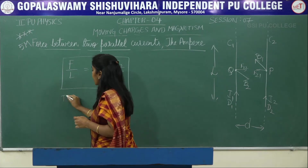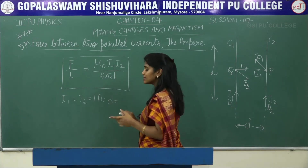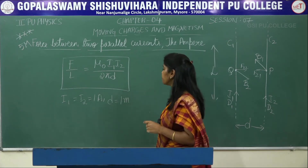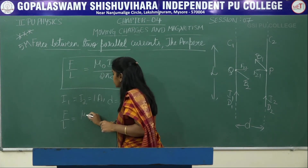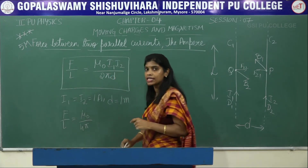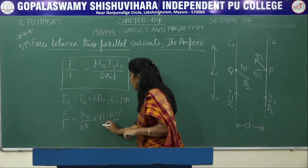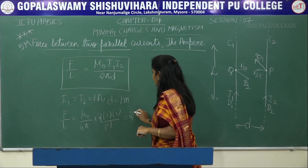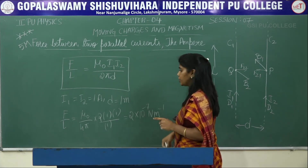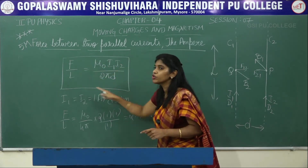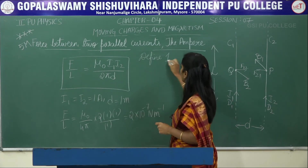Now, if I1 = I2 = 1 ampere and the distance between the conductors is 1 meter, then the force per unit length equals μ₀ / 2π. Since μ₀ / 4π = 10⁻⁷ N/A², this gives a force per unit length of 2 × 10⁻⁷ Newton per meter.